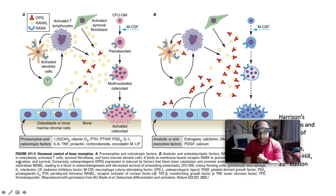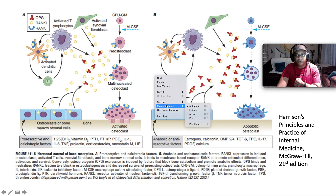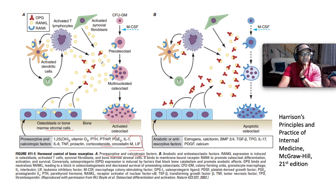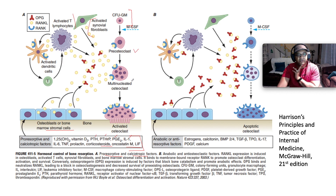This diagram demonstrates hormonal control of bone resorption. Pro-resorptive and calciotropic factors include 1,25-dihydroxyvitamin D3, parathyroid hormone, PTH-related protein, interleukin-1 and -6, TNF, prolactin, and corticosteroids. These act on osteoblasts or bone marrow stromal cells, activating colony-forming unit granulocyte-macrophage, which activates pro-osteoclasts differentiating into multinucleated osteoclasts, leading to bone resorption.